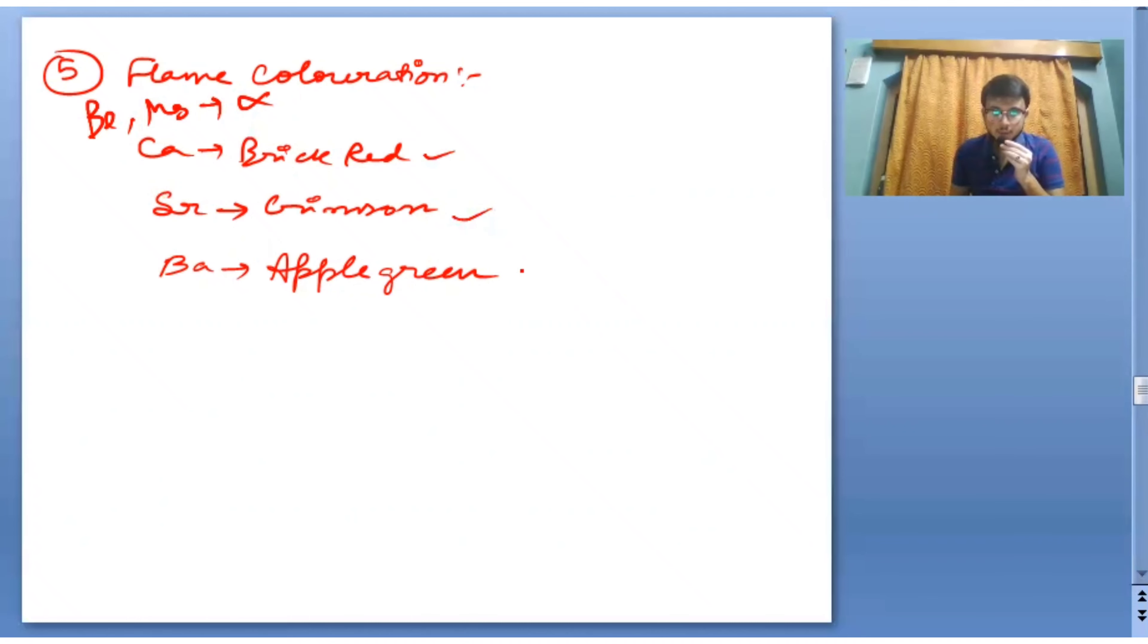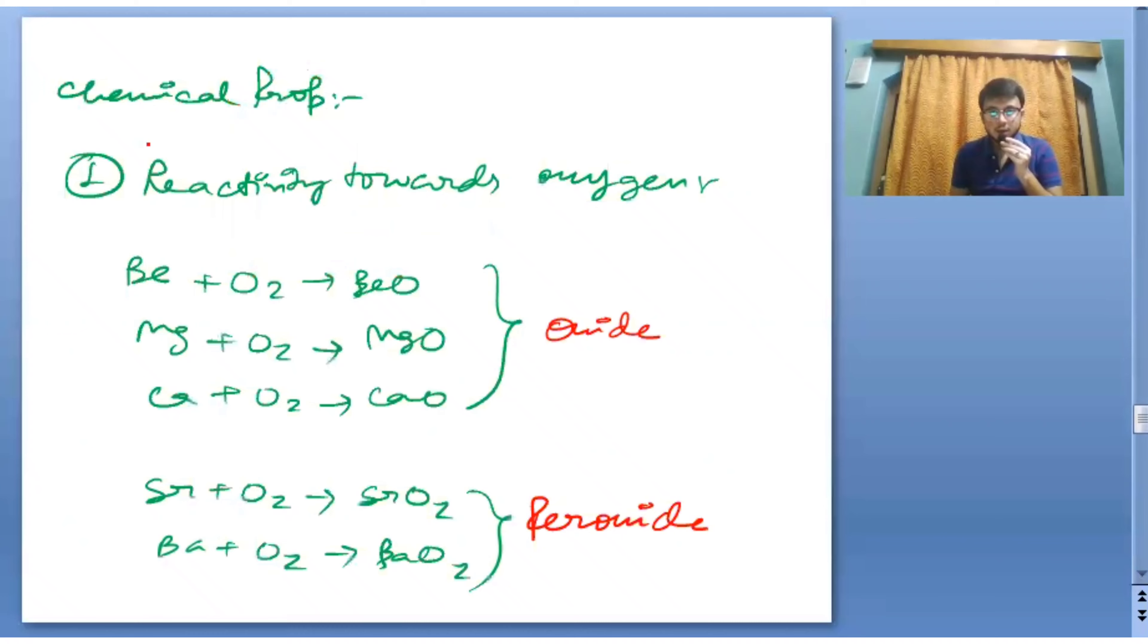It is only crimson, not crimson red. Next is chemical properties, reactivity towards oxygen. The three metals Be, Mg, Ca forms peroxide.